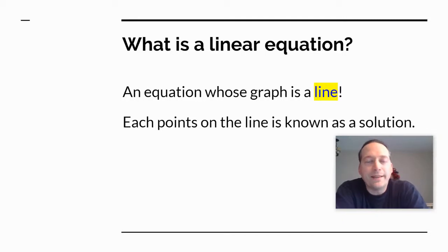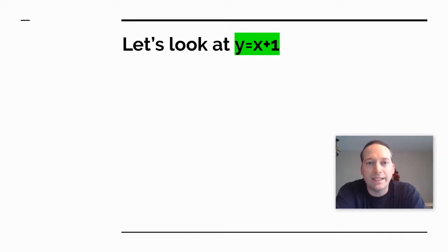So each point that is on the line is what's called a solution or what's known as a solution. Now there's an infinite number of solutions on each line. We tend to just deal with the easy ones, the ones that have, for the most part, a whole number X coordinate and a whole number Y coordinate. But there's an infinite number that you can deal with.